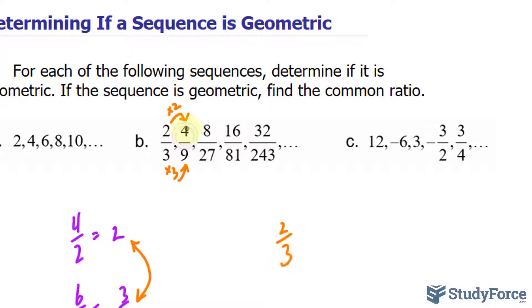Let's see if that works for 4 over 9. Multiplying 4 by 2 does give me 8 and 9 times 3 gives me 27. Let's try once more for good measure. 8 times 2 gives us 16 and 27 times 3 gives us 81, therefore this is geometric.